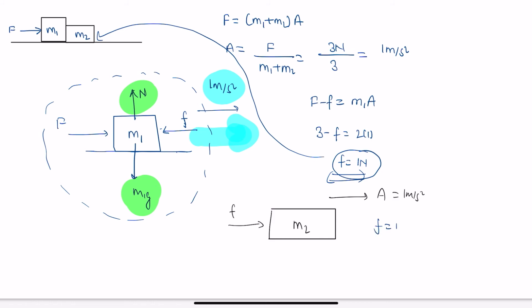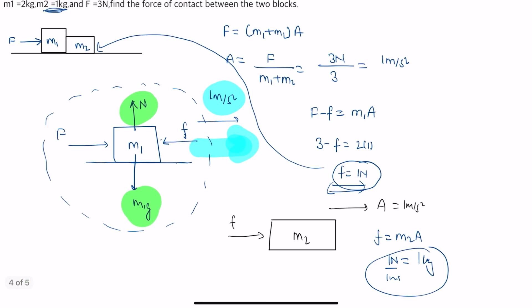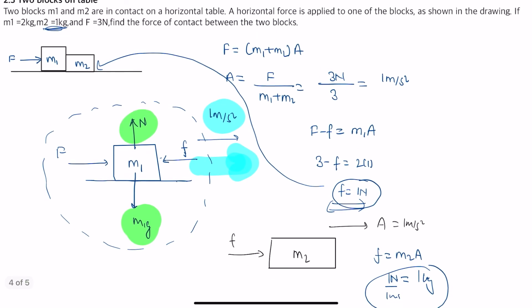F equals m2 times a. And if I put F as 1 newton and acceleration is 1 meter per second squared, my mass should be 1 kg. Just to confirm this, m2 is 1 kg, so it means that my answer is correct. So with this we are done with this problem and I'll see you in the next problem.